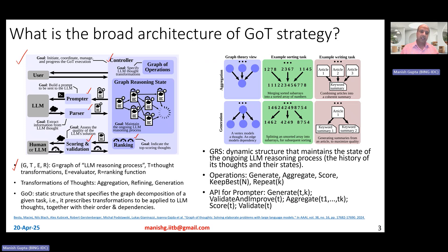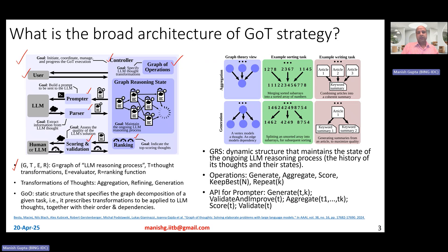The controller manages, coordinates, and initiates everything for the entire graph of thoughts process. The prompt engineer feeds the controller with a graph of operations — a static directed acyclic graph where the user specifies the decomposition of a given task. For example, for a sorting task, it specifies what transformations should be applied to the LLM thoughts, along with their order and dependencies, to accomplish the overall task. This strategy requires substantial prompt engineering because the graph of operations must be provided by a prompt engineer.